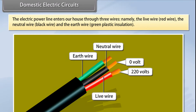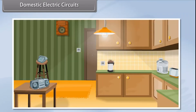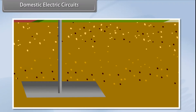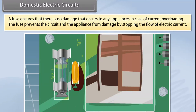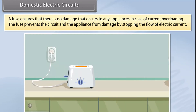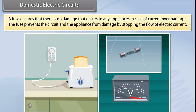The live wire has a high potential of 220 volts and the neutral wire has zero potential, so the potential difference between them is 220 volts. Different circuits are used for different appliances in the house. The earth wire is connected to a metal plate deep in the earth to avoid severe electric shock in case of current leakage. A fuse ensures there is no damage to appliances in case of current overloading, which occurs when the live wire and neutral wire come into contact or there is a rise in supply voltage.